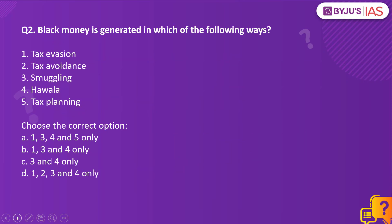Moving on to question number two: Black money is generated in which of the following ways — tax evasion, tax avoidance, smuggling, hawala, or tax planning? The right answer to this question is option D: 1, 2, 3 and 4 only. Tax planning does not lead to the generation of black money. While tax evasion, tax avoidance, smuggling, and hawala all lead to the concealment of money, generating black money.